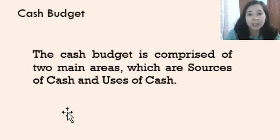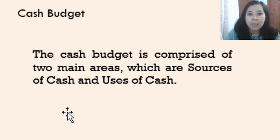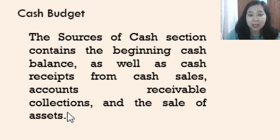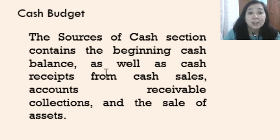The cash budget is comprised of two main areas: sources and uses. Sources refer to where our cash comes from — these are our cash inflows. Uses refer to what activities utilize cash — these are our cash outflows. The sources of cash section contains the beginning cash balance, which is the remaining cash from the previous period. We add this beginning balance to the cash receipts during the year, which may come from cash sales, collection from accounts receivable, and sales of assets.